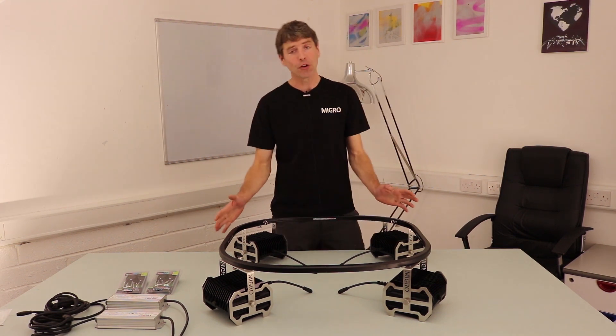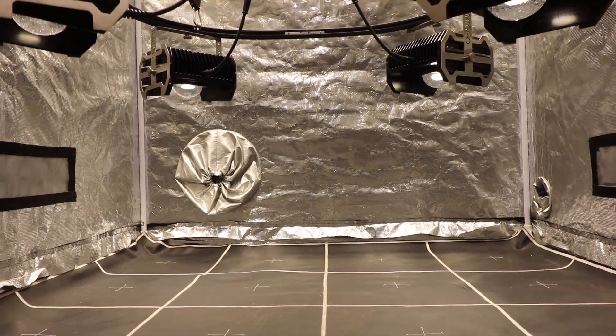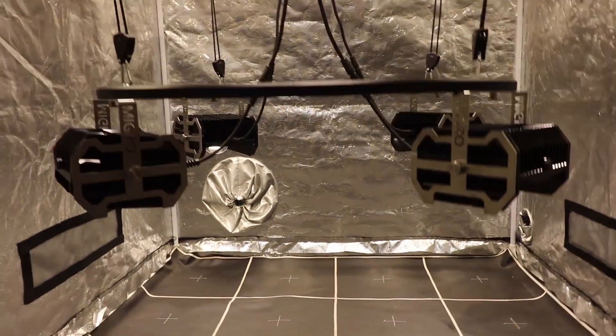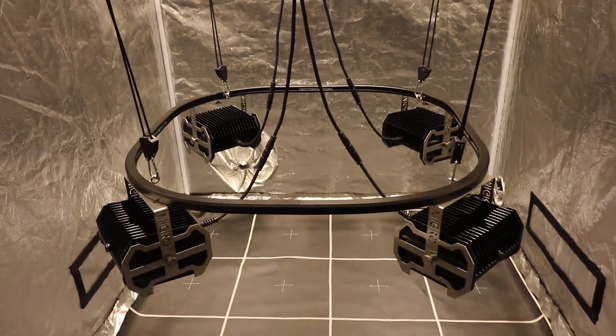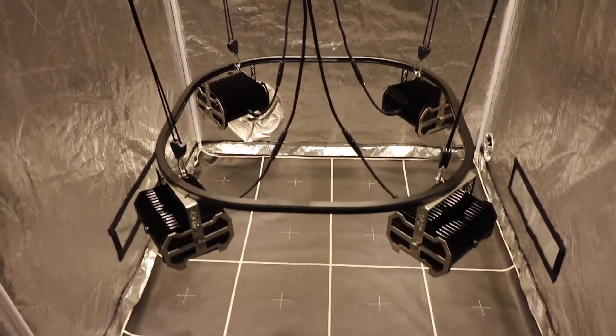The MIGRO 400 is designed to suit a 3 foot by 3 foot up to 4 foot by 4 foot, that's 1 meter by 1 meter to 1.2 meter by 1.2 meter grow size.